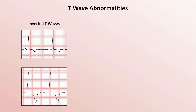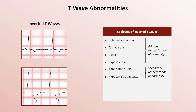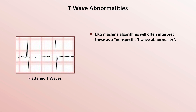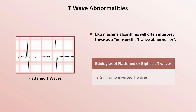There are many etiologies of inverted T-waves. This list largely overlaps with those etiologies causing ST depressions. The three major additions include intracranial hemorrhage — in which case the T-wave inversions are occasionally extremely dramatic — late stage pericarditis, and hypothyroidism. Instead of being inverted, T-waves may also be flattened or even biphasic, with both positive and negative components. The EKG machine algorithm will often interpret these as a nonspecific T-wave abnormality. The etiologies of flattened or biphasic T-waves are similar to those of inverted T-waves.